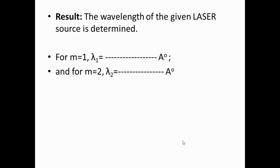Coming to the result: the wavelength of the given laser source is determined. For the first order (M = 1), the calculated wavelength is recorded, and for the second order (M = 2), the wavelength is similarly recorded. Thank you.